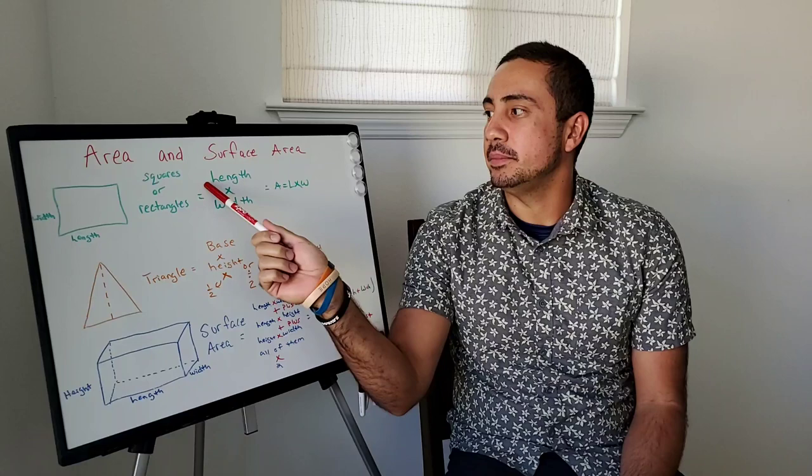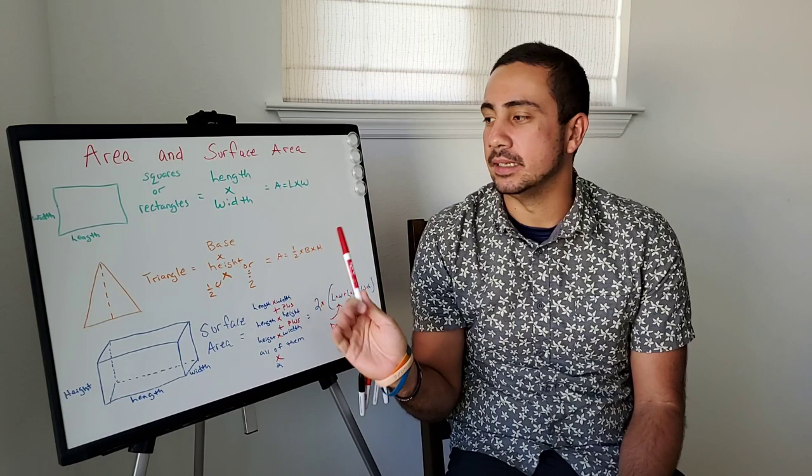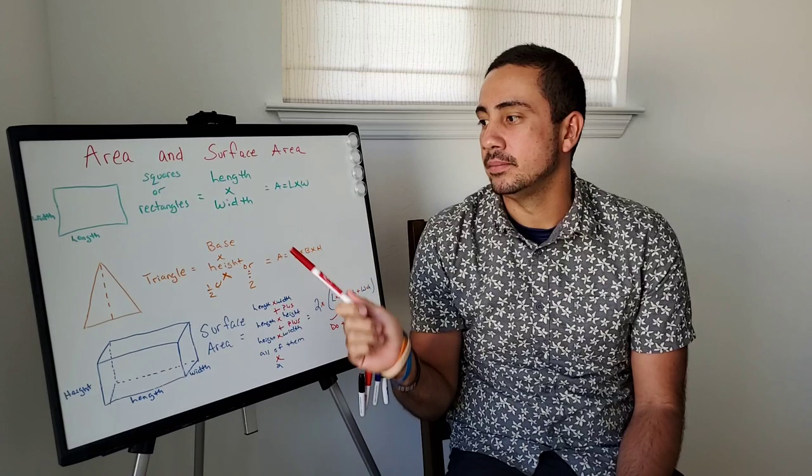Squares or rectangles: area is length times width. Length times width — real easy. Remember, it's always going to end up with the answer in square feet.